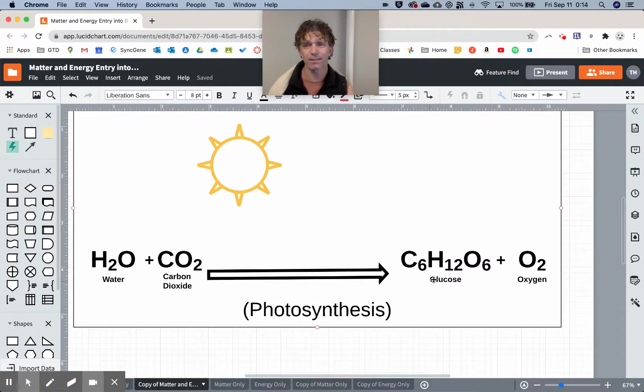Water and carbon dioxide in, glucose and oxygen as the products. This carbon dioxide gets converted into glucose. Then, as we talked about in the assignment, the glucose gets turned into things like cellulose or lignin inside the plant, which is the structure of the plant - the seeds, the bark, the leaves.